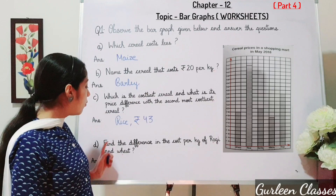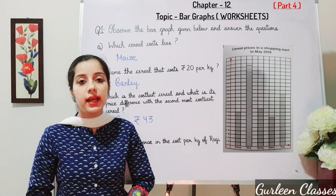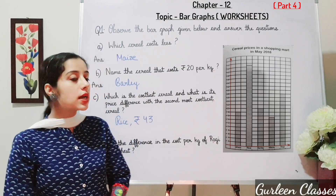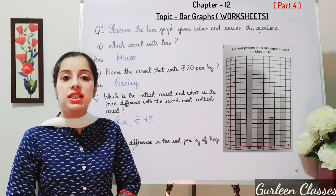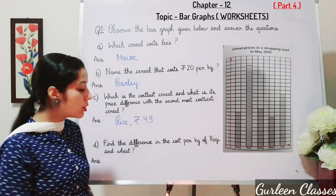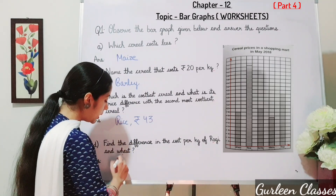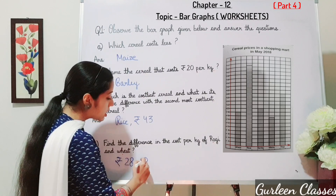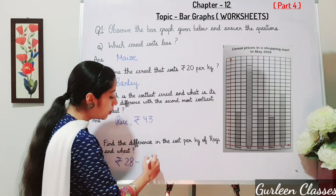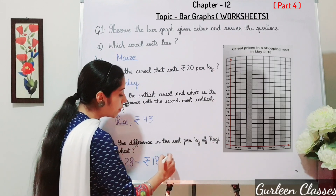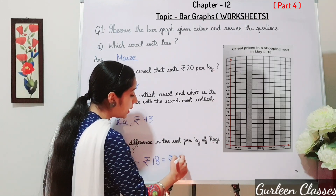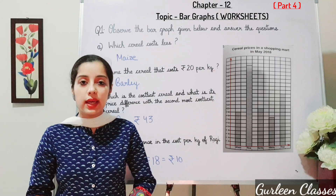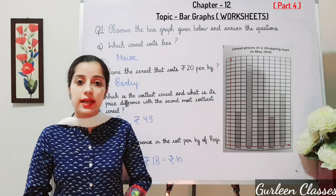Part D: find the difference in the cost per kg of ragi and wheat. The cost of ragi is rupees 28, minus the cost of wheat which is rupees 18. So the difference is rupees 10. The difference in the cost per kg of ragi and wheat is rupees 10.